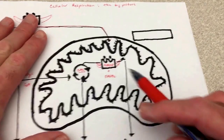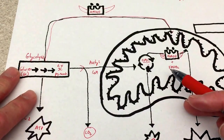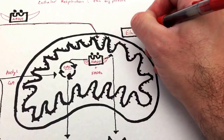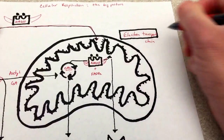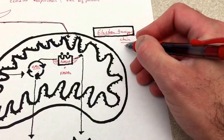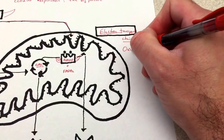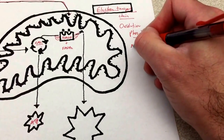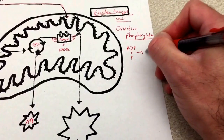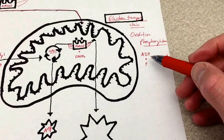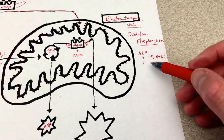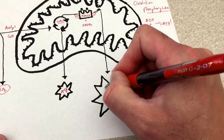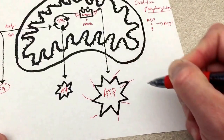Coming back to our big picture: NADH from glycolysis, and NADH and FADH2 from the citric acid cycle, drop off their electrons at the proteins of the electron transport chain — the ETC. The whole process of making ATP there is referred to as oxidative phosphorylation — putting a phosphate onto adenosine diphosphate to make adenosine triphosphate. This third process gives us a ton of ATP, about 36.